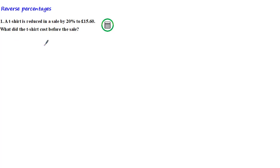One way we can do this is by using a proportion method, where we say that the original value is always equivalent to 100%, and then try to work out what 100% is equal to.